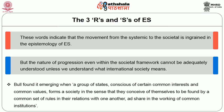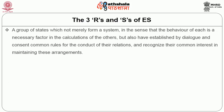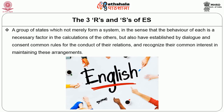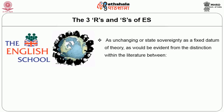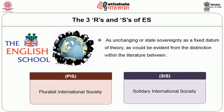Bull found international society emerging when a group of states, conscious of certain common interests and common values, forms a society in the sense that they conceive of themselves to be bound by a common set of rules in their relations with one another and share in the working of common institutions. Bull and Watson later defined international society as a group of states which not merely form a system, but have also established by dialogue and consent common rules for the conduct of their relations and recognize their common interest in maintaining these arrangements.